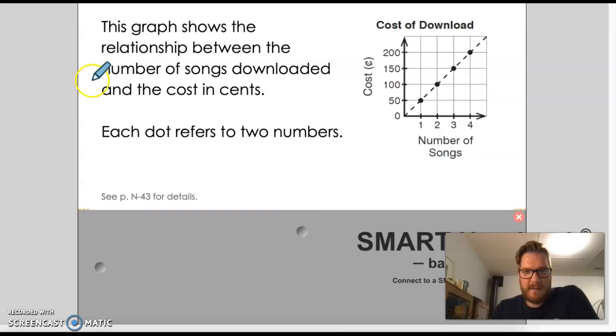So here's this graph, and it shows the relationship between the numbers of songs downloaded and the cost in cents. For example, if you download one song, it costs 50 cents. If you download two songs, it costs 100 cents or a dollar. Three songs is $1.50, and four songs is $2. Each dot refers to two numbers. We call those two numbers ordered pairs.